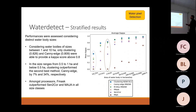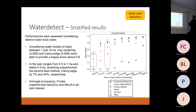In the smaller size ranges — 0.5 to 1 and below 0.5 hectares — clustering outperformed the second-best by 7 and 34 percent respectively. We had a huge improvement for smaller water bodies using this methodology.